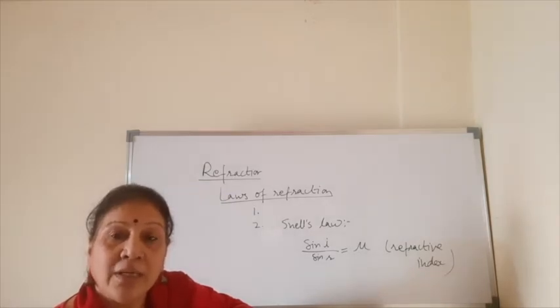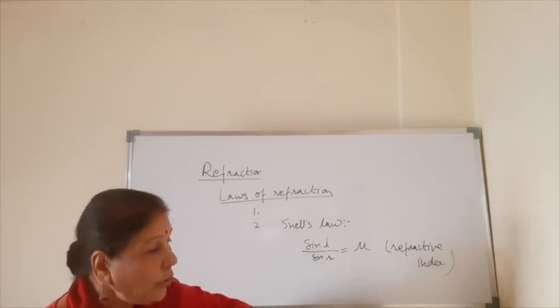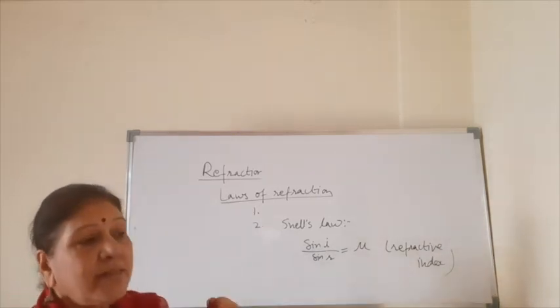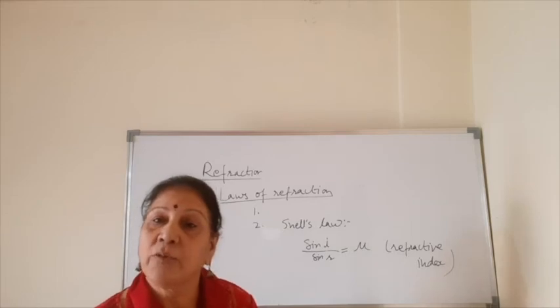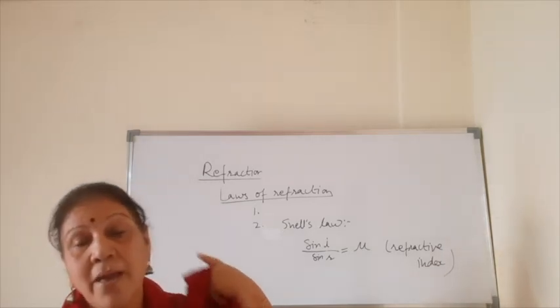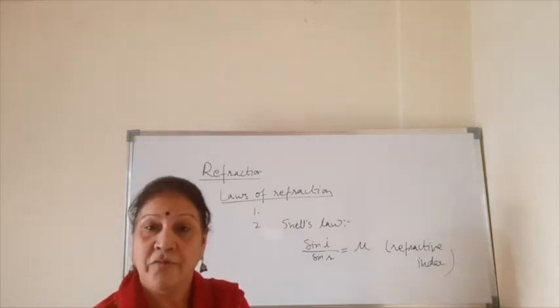To summarize: the first law states that the incident ray, refracted ray, and normal at the point of interface all lie in the same plane. The second law states that sine of angle i divided by sine of angle r is always a constant — the refractive index of the medium. This is all about the laws of refraction.